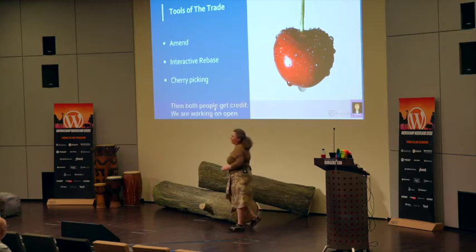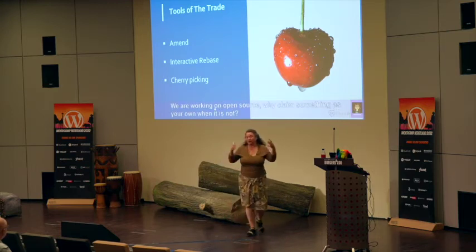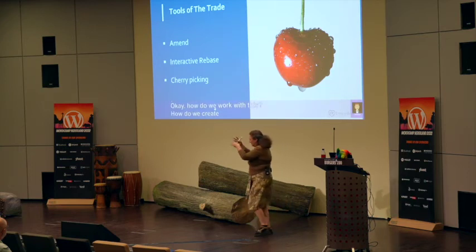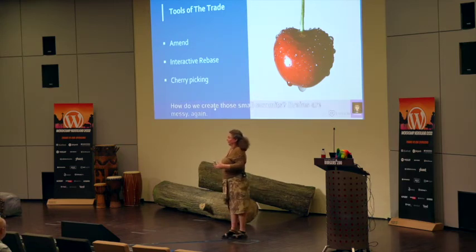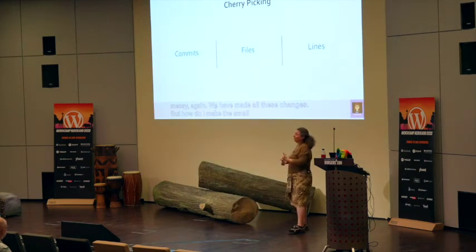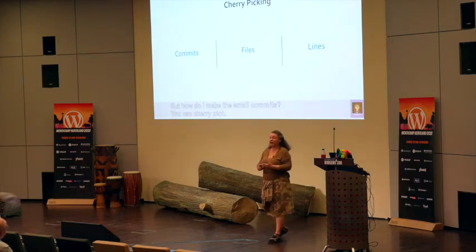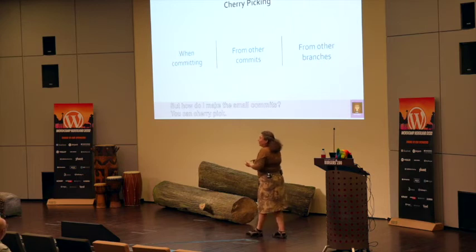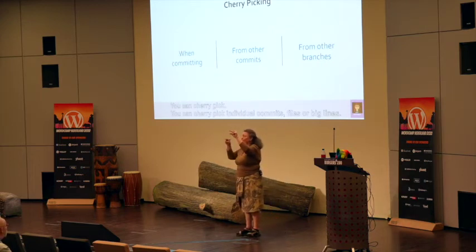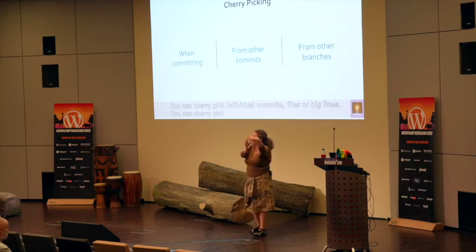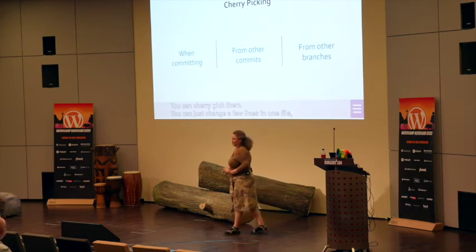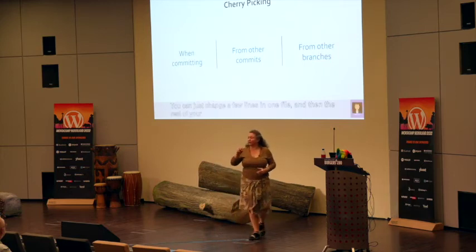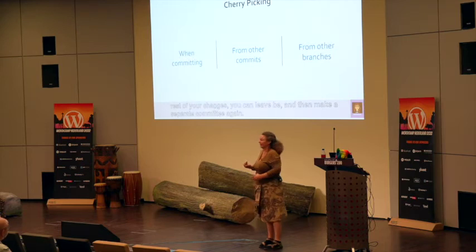How do we create those small commits when our brains are messy and we've made all those changes? You can cherry-pick. You can cherry-pick individual commits, cherry-pick files, and even cherry-pick individual lines. You can cherry-pick when committing — stage just a few lines and one file, commit that first, then stage another part and make a separate commit. You can also pick things from other commits or even from other branches. Cherry picking is useful.